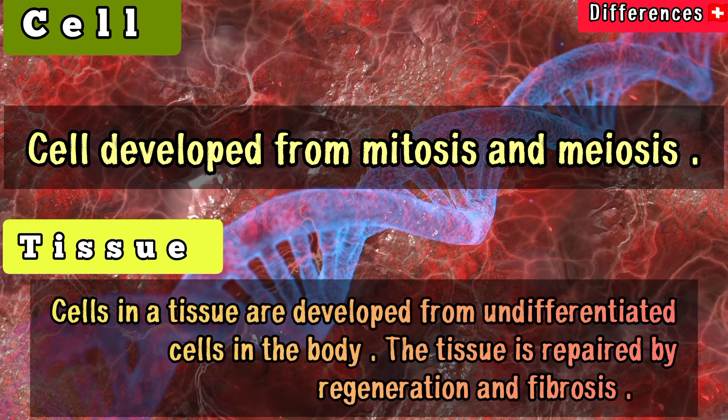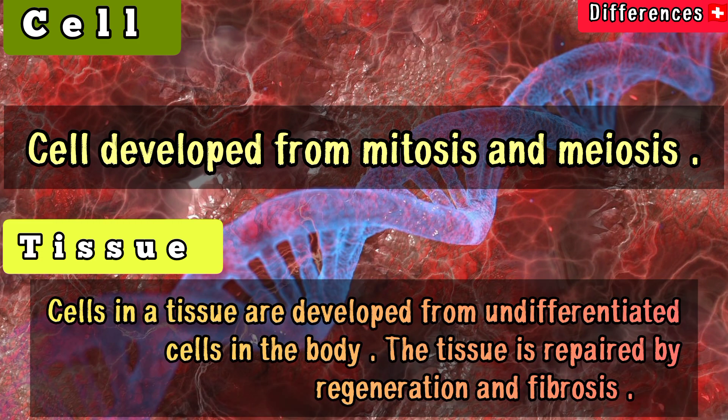Cells in a tissue are developed from undifferentiated cells in the body. The tissue is repaired by regeneration and fibrosis.